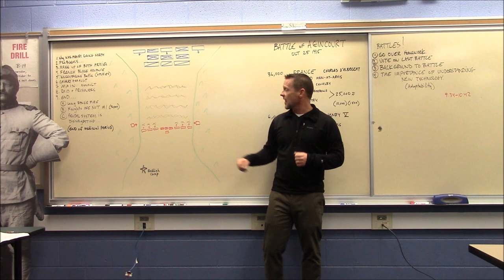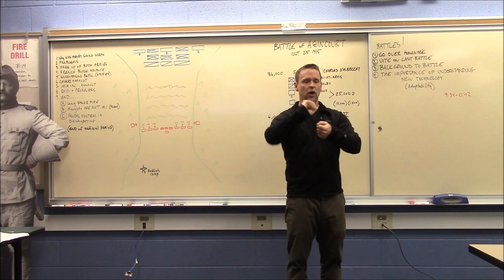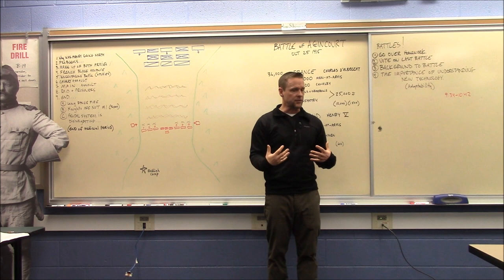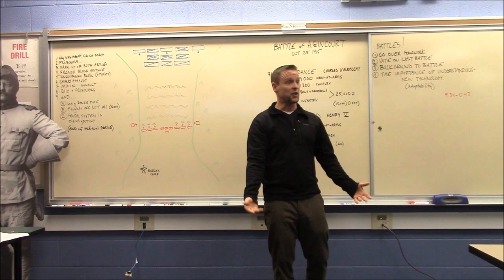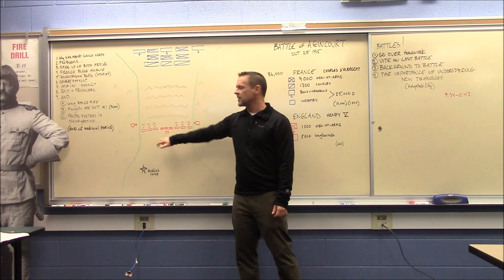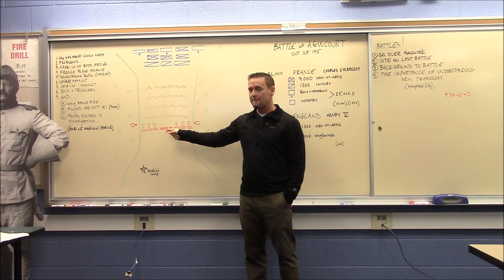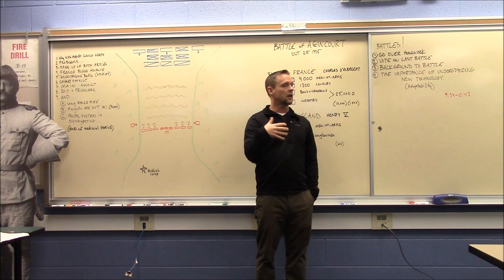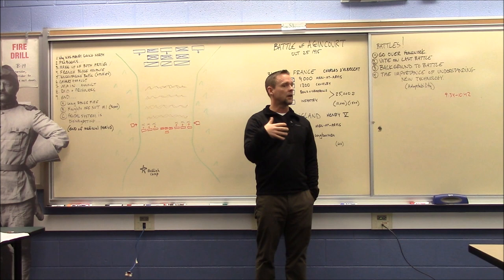Then what he does is he has his other archers move up, and they take stakes, and they sharpen one end, and then they drive it into the ground facing the opposite direction. What they do with these stakes is they're going to hide behind them. The thought is horses will impale themselves on these stakes. They've got to have some kind of protection. And then Henry puts his very small number of men-at-arms right in the middle.